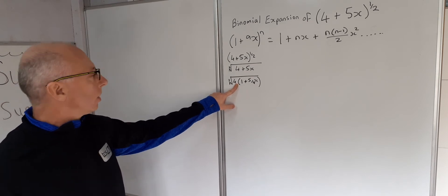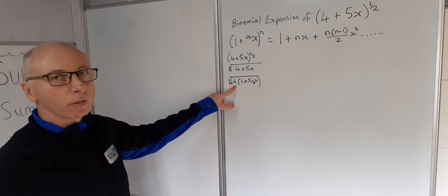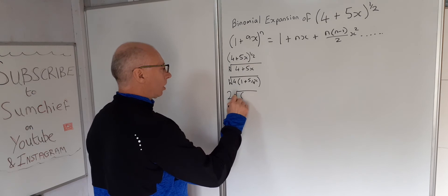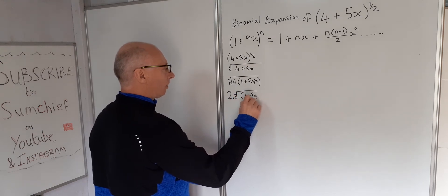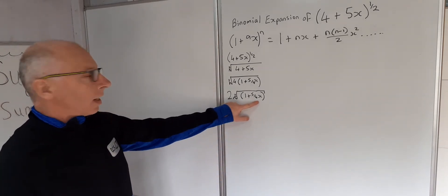So square root of 4 inside the radical, what we can do is we can take 2 out, obviously square root of 4 is 2. So we get 2 times square root of 1 plus 5 over 4x.